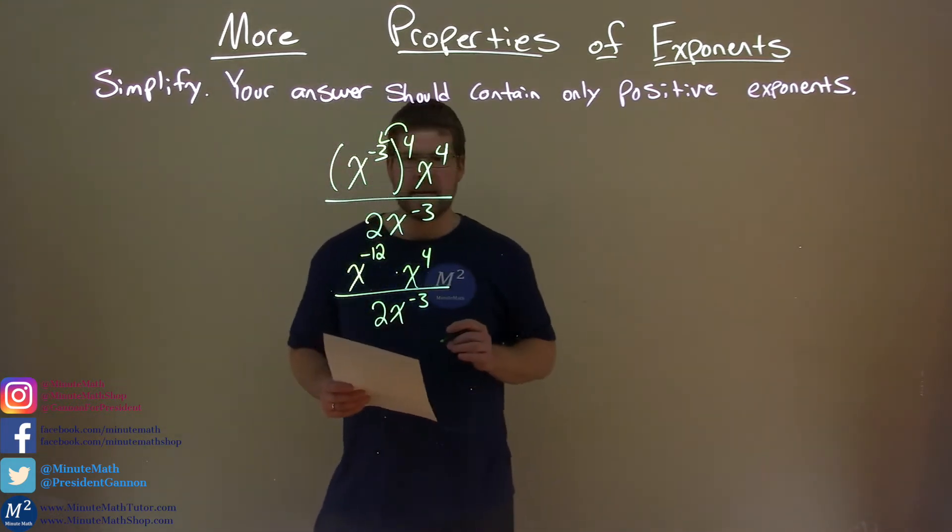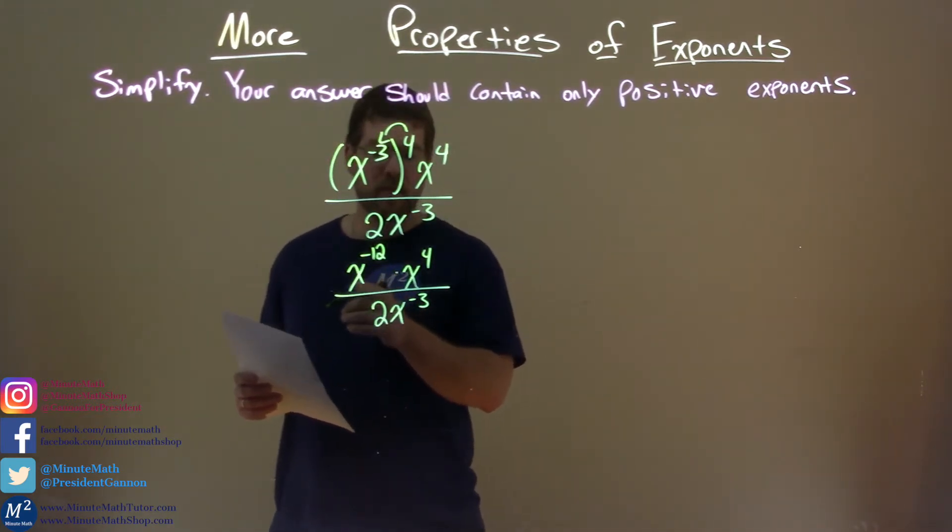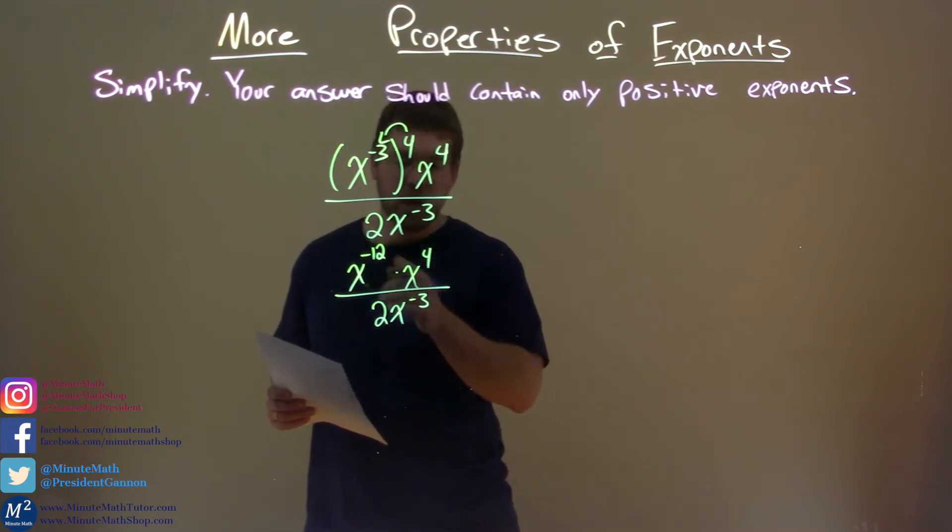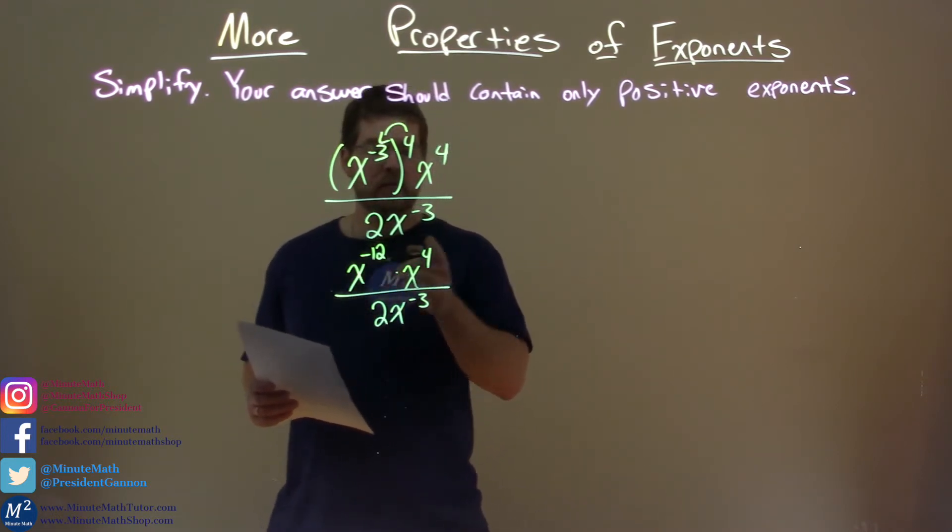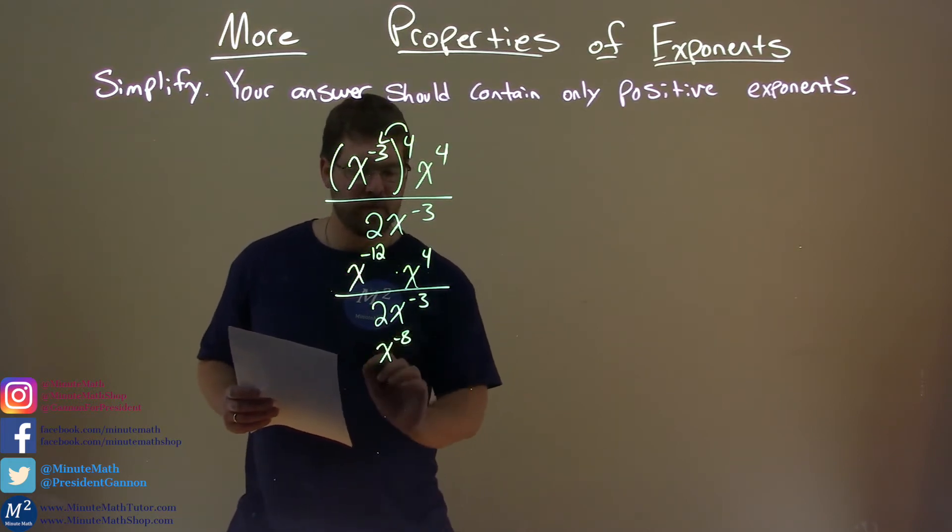We have 2x to the negative third power here. Let's keep dealing with the numerator. We add our exponents since we have the same base. x to the negative 12 times x to the fourth, we add the exponents. Negative 12 plus 4 is negative 8. So we have x to the negative 8, over 2x to the negative third.